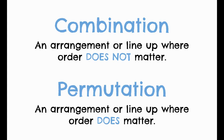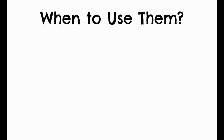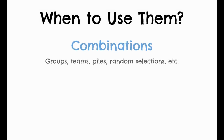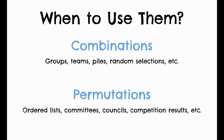We'll focus first on combinations. We use combinations when we are talking about groups, teams, making piles, or making random selections. Permutations are used when we have ordered lists, committees or councils, or competition results — so if you have first, second, and third place, things like that.